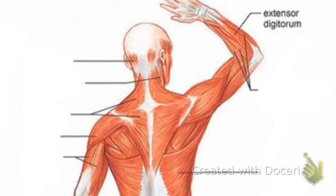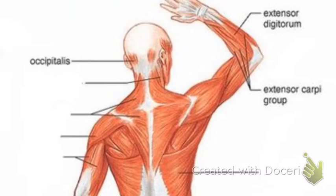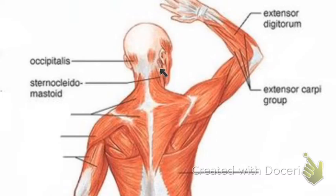On the backside, you've got extensor digitorum — that's what extends your fingers to straighten them out. Extensor carpi extends your wrist and hand so that it can be pulled back. Occipitalis is the muscle in the back of your head; when you smile you can feel it contracting back there — that is your occipitalis. Sternocleidomastoid is seen again here; it inserts in the back to help you rotate your head and originates down below.